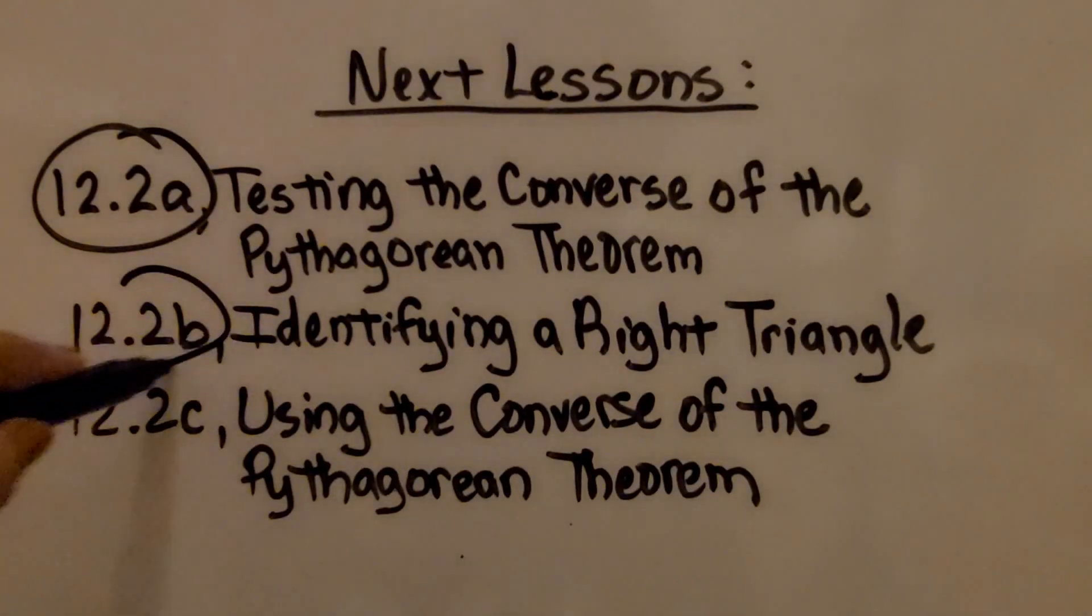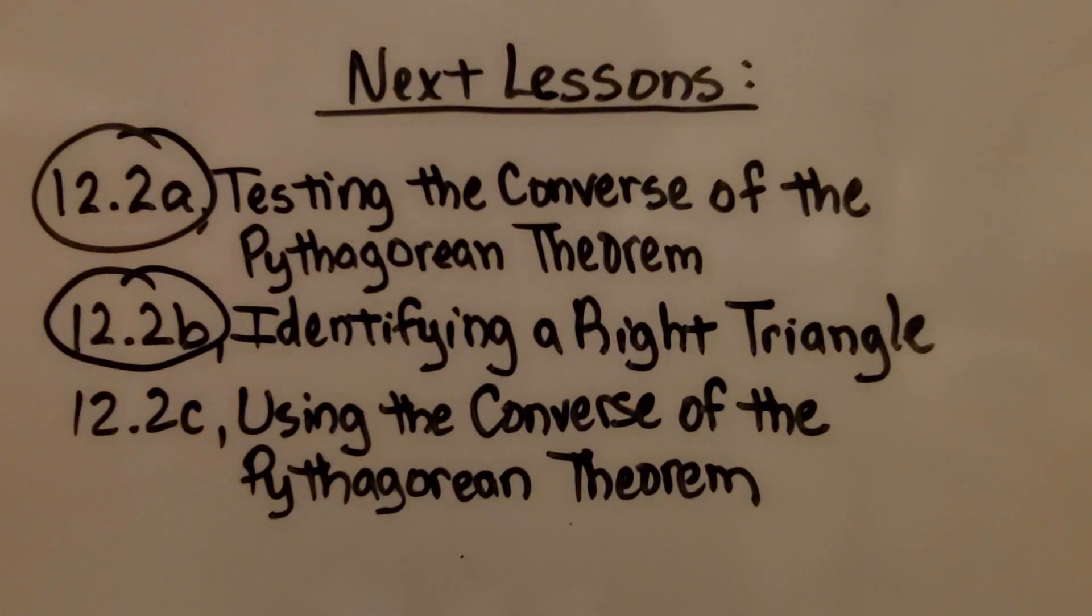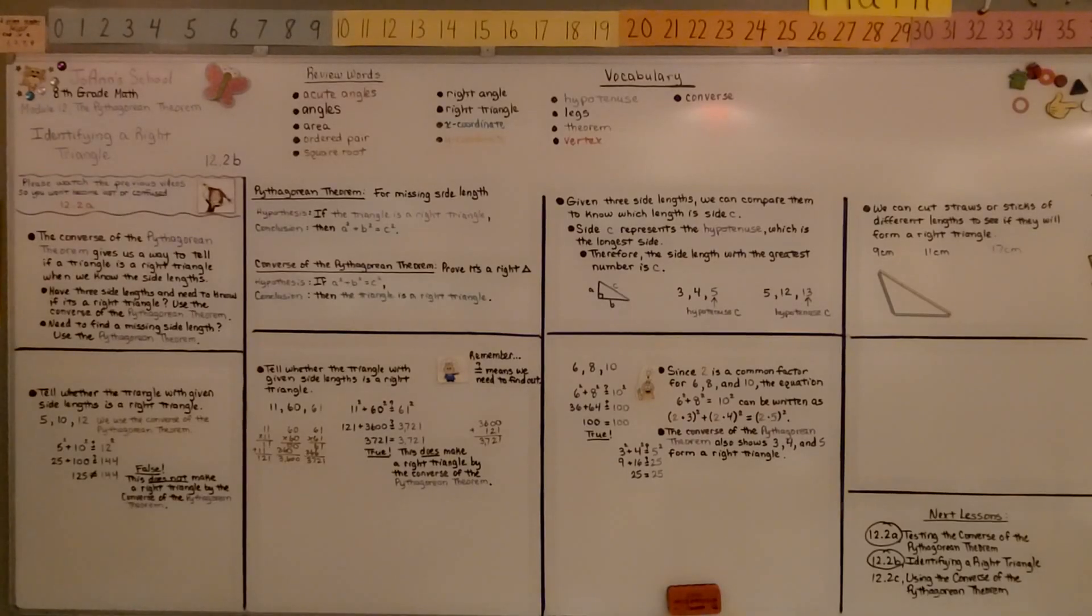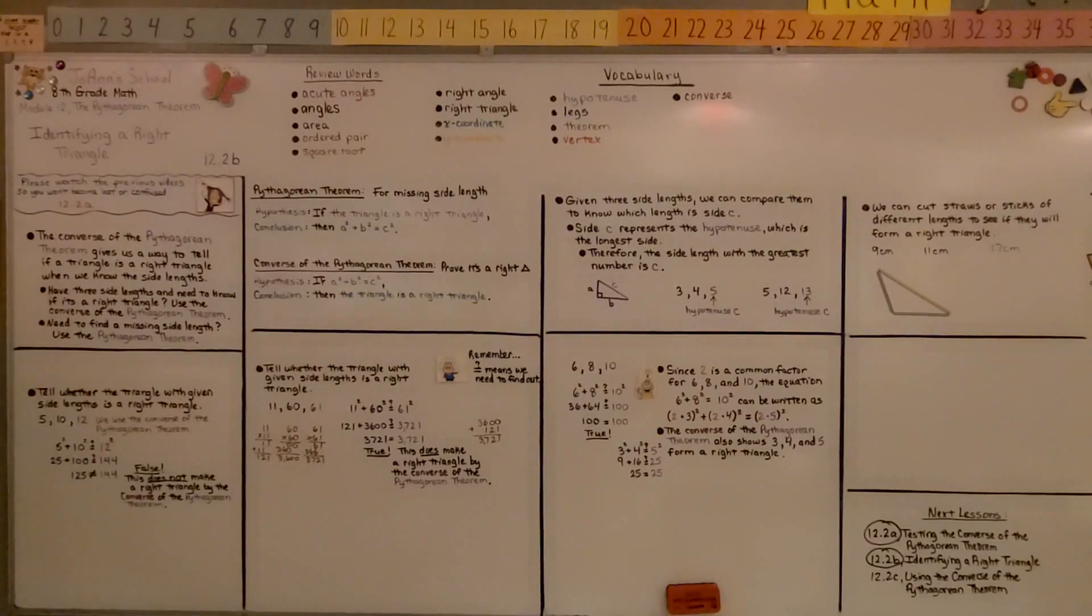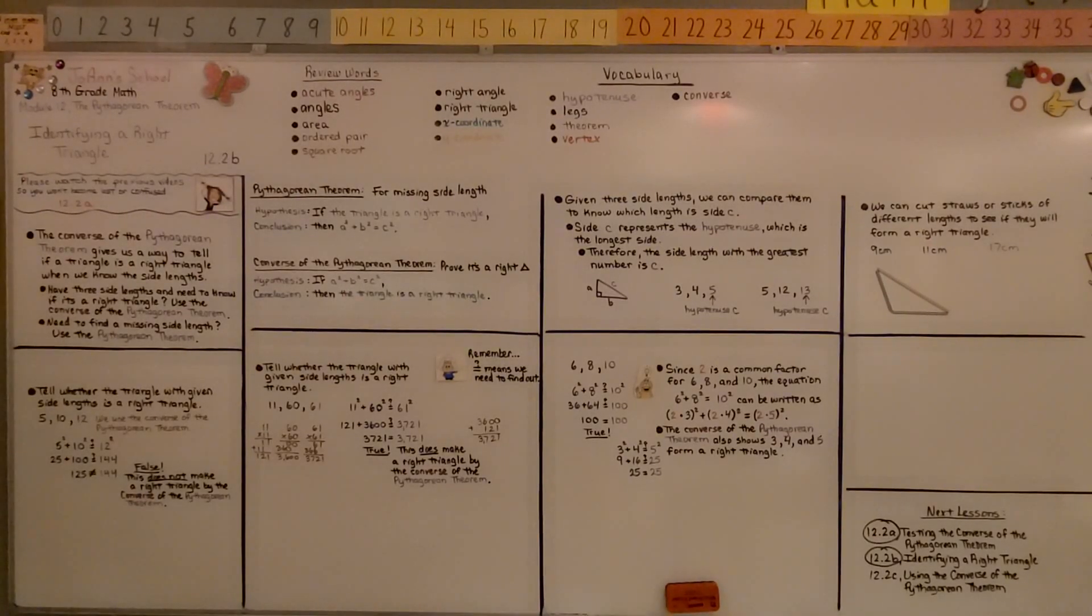We're finished with part B. We're going to move on to C using the converse of the Pythagorean theorem. Did this make sense to you? Did you understand it? If it did, let me know by hitting that like button. It's the only way I can tell. Have a great day and join me for the last part of the lesson.